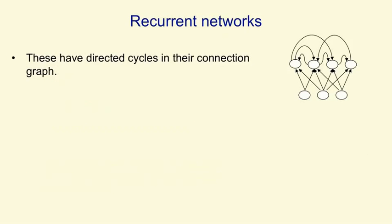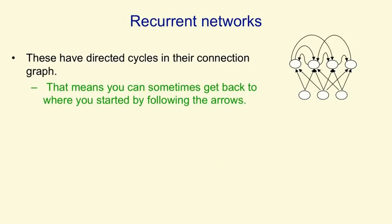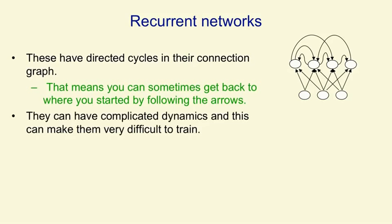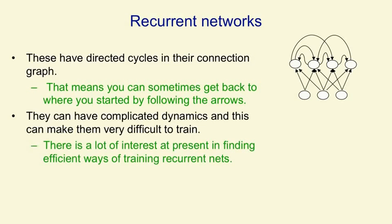Recurrent neural networks are much more powerful than feed-forward neural networks. They have directed cycles in their connection graph. What this means is that if you start at a node, or a neuron, and you follow the arrows, you can sometimes get back to the neuron you started at. They can have very complicated dynamics, and this can make them very difficult to train. There's a lot of interest at present in finding efficient ways of training recurrent nets, because they are so powerful if we can train them.